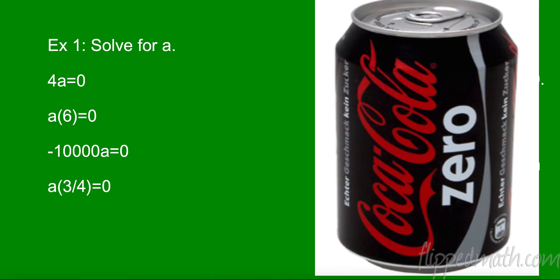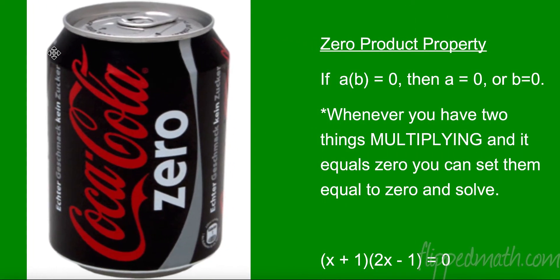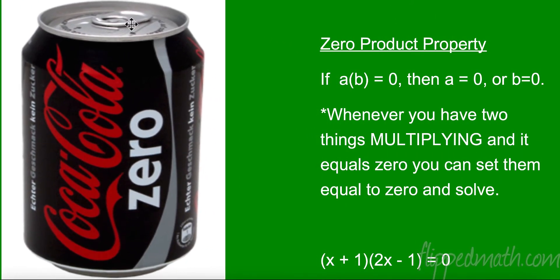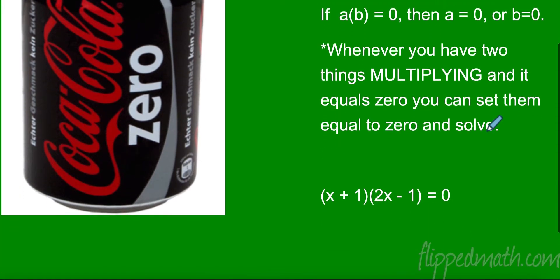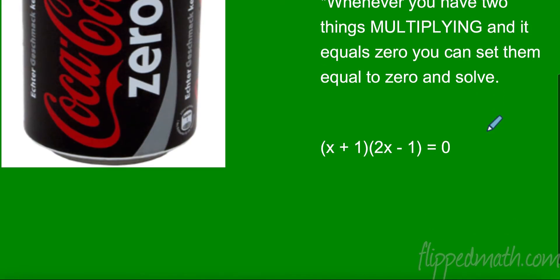I know that seems simple, but it's very important and it's something a lot of students just don't think about. What it's actually called is the Zero Product Property. In a nutshell: when I have two numbers multiplying and the product is zero, then one of those two things has to be zero — either a has to be zero or b has to be zero. We can set these things equal to zero and solve them.